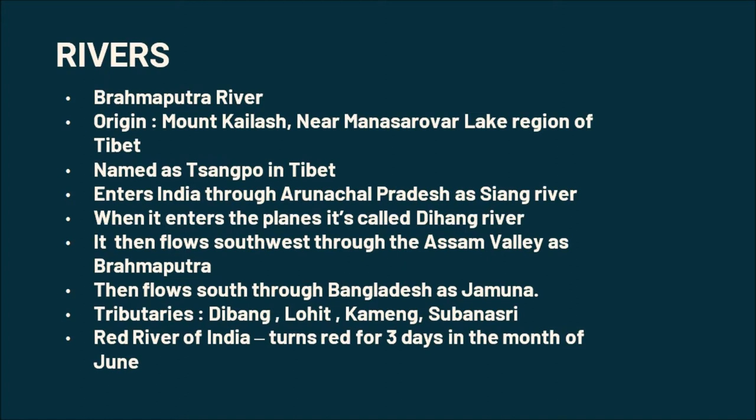Then it flows southwest through the Assam valley as Brahmaputra, and then it flows south through Bangladesh as Jamuna — and it must be noted that this Jamuna is different from the Yamuna which is a tributary of the Ganga. Dibang, Lohit, Kameng, and Subansiri are the tributaries of Brahmaputra.